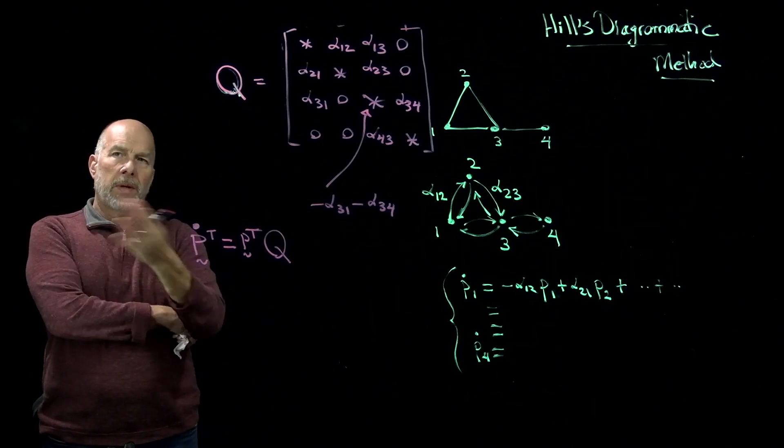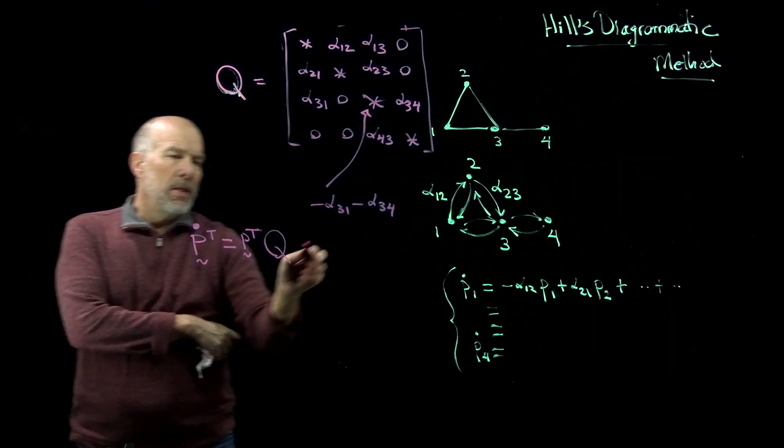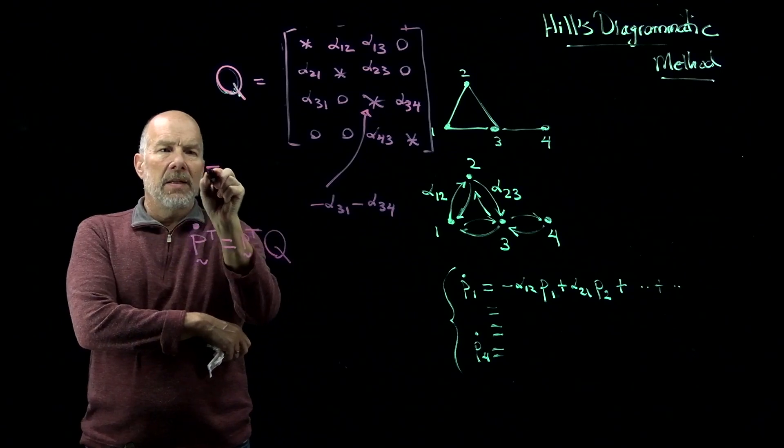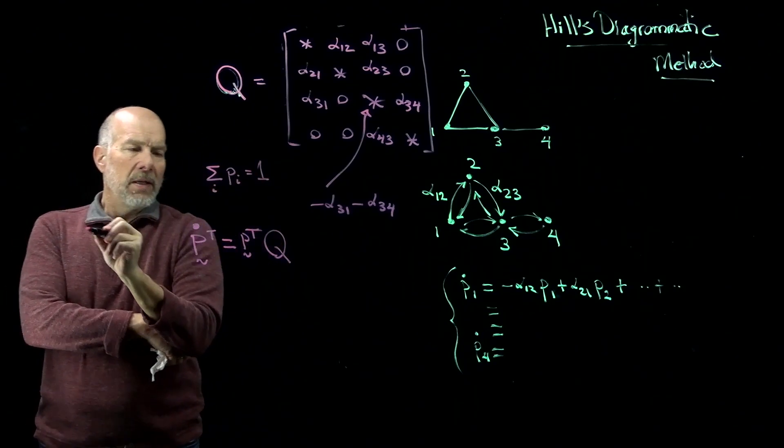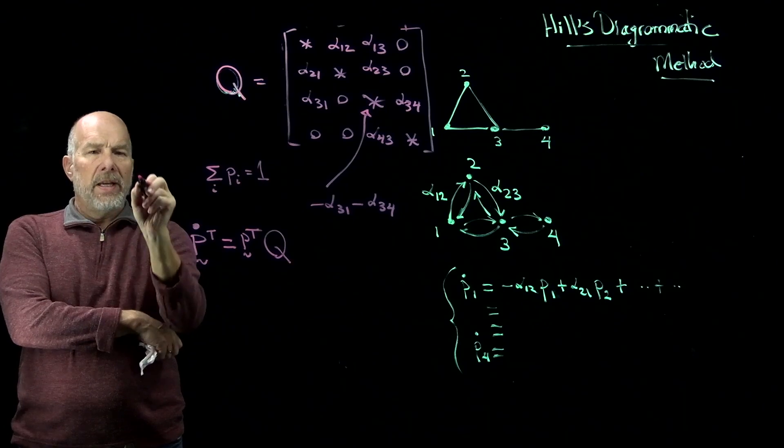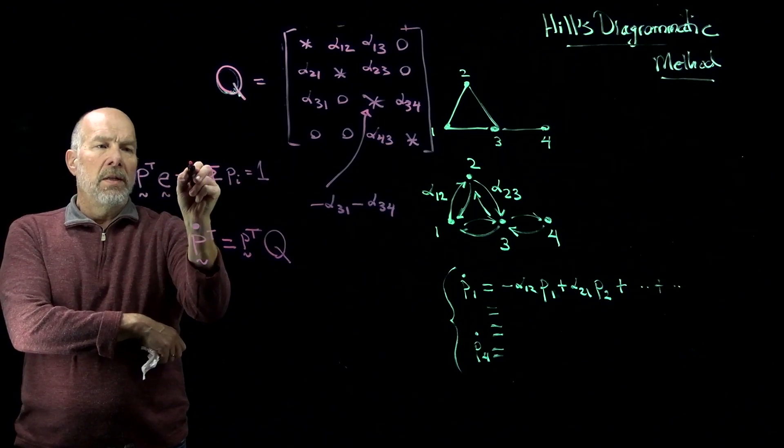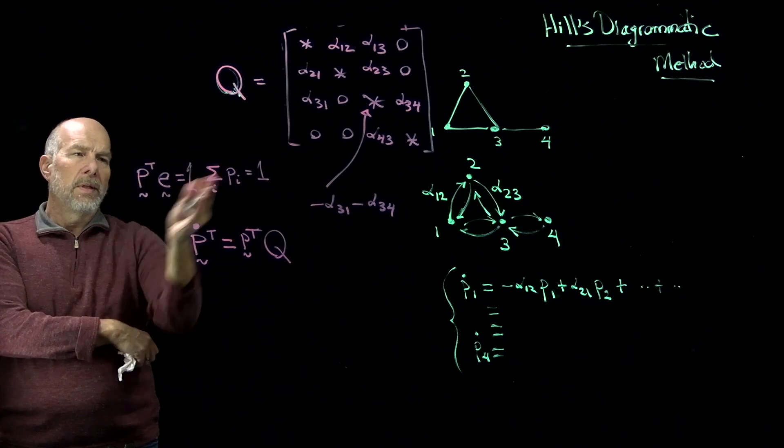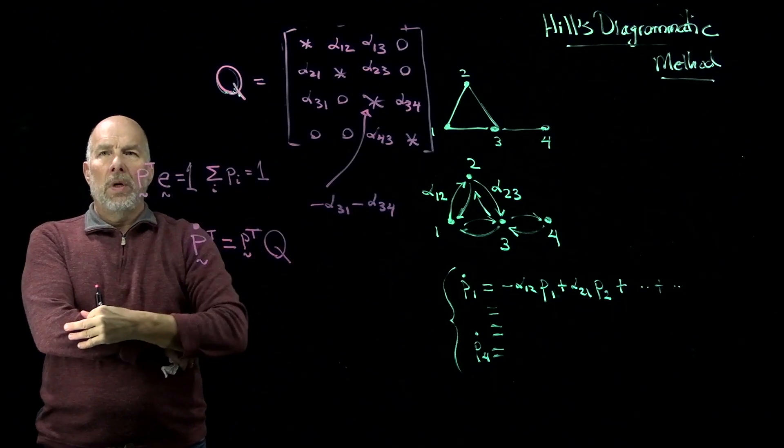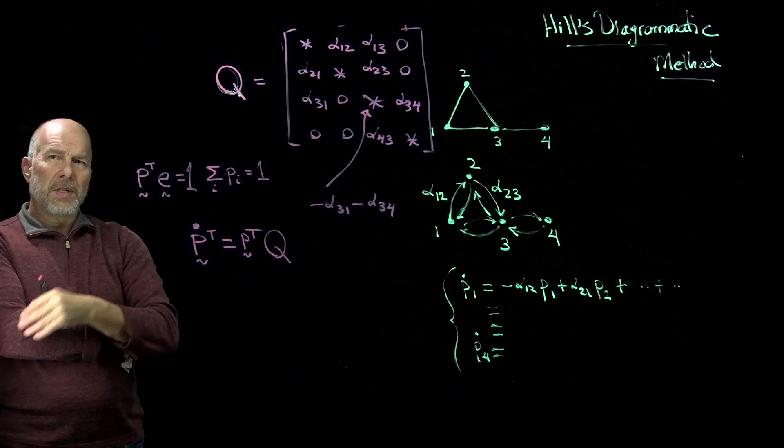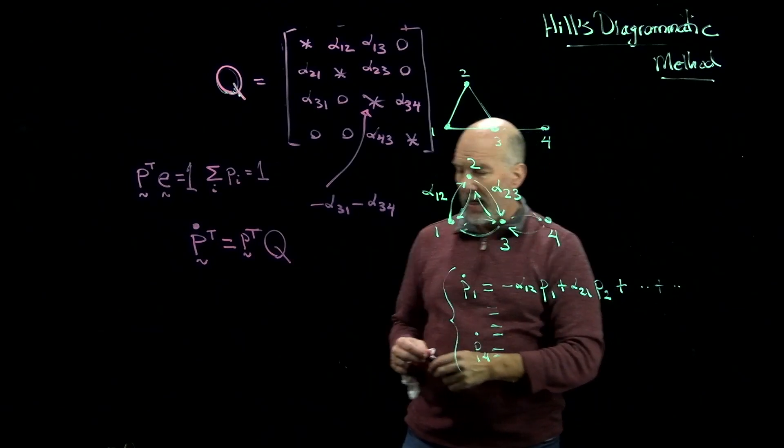Now, usually we're thinking of P as being probabilities. The probabilities will have to add up to 1. One way of writing that is to say that the sum over each index i of Pi has to be 1. Another way of saying the same thing is that if you take this row vector of probabilities and multiply it by a column vector of 1's, that inner product will end up giving you 1. They're saying the same thing.